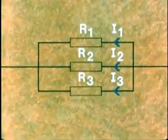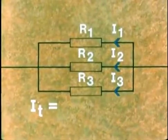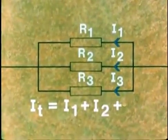The total current flowing IT is equal to I1 plus I2 plus I3.